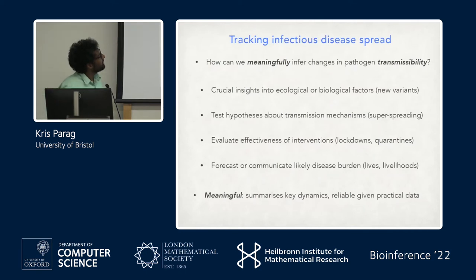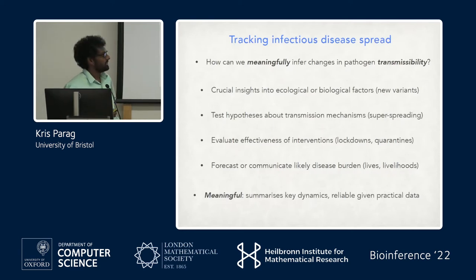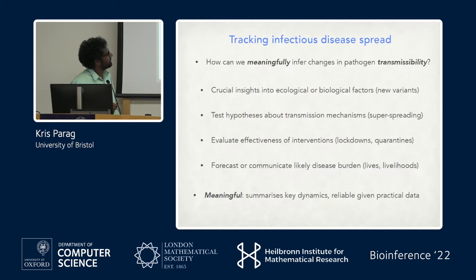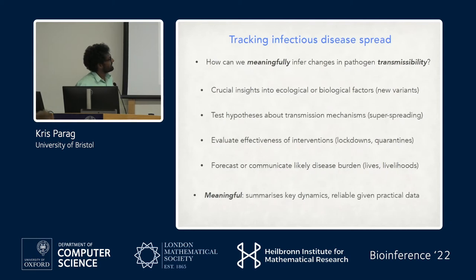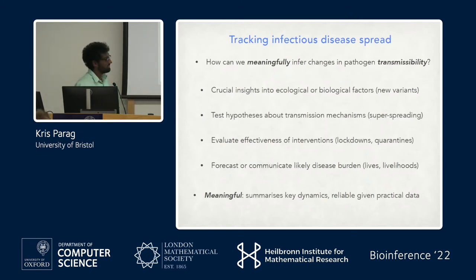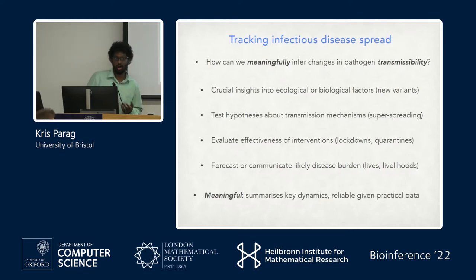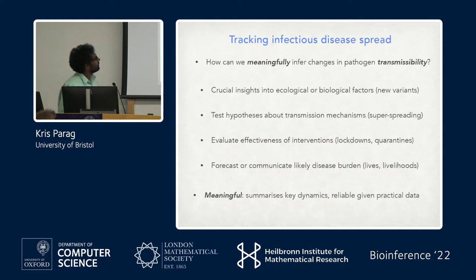The general question is: how could we think about changes in pathogen transmissibility and why would we want to do it? The pandemic gives a lot of good examples. You'd want to know what factors might have changed, such as the emergence of new variants, test hypotheses about what might be driving transmission, look at transmissibility before and after interventions to gauge their effectiveness, and do some forecasting. But what we're more interested in here is what does 'meaningful' mean.